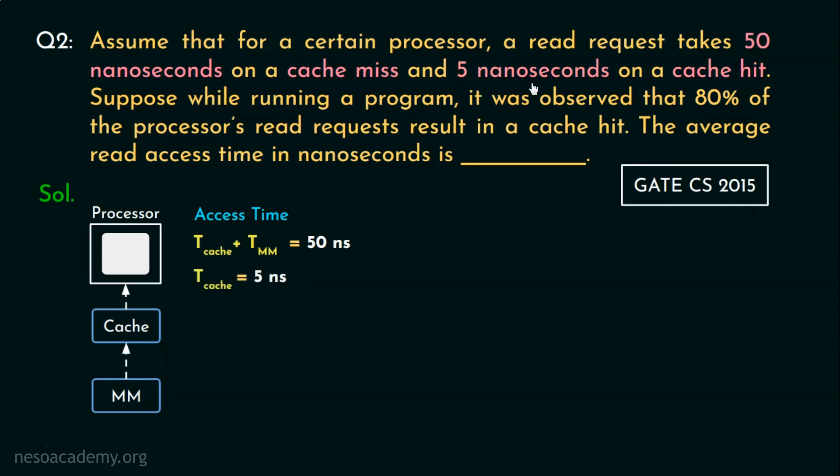That means total time to access both the cache and the main memory must be 50 nanoseconds, because during cache hit, it's only taking 5 nanoseconds. Here, the question itself is specifying the organization to be considered. And regarding hit ratio, it's 80%, that is 0.8, similar to the previous one.